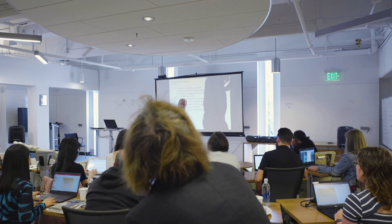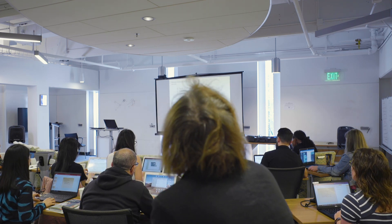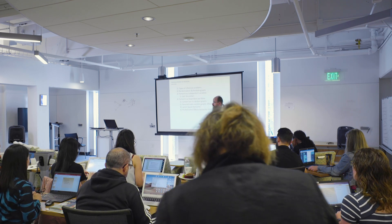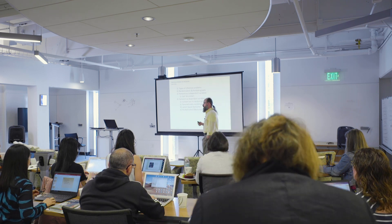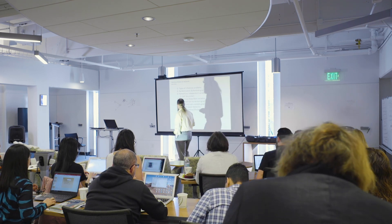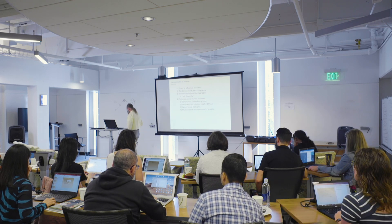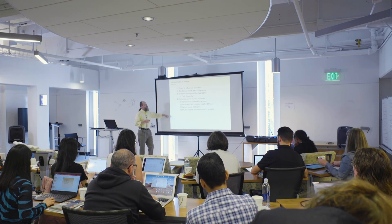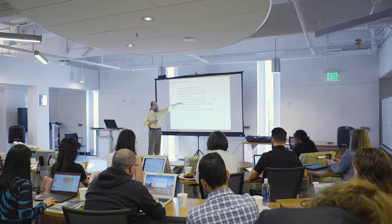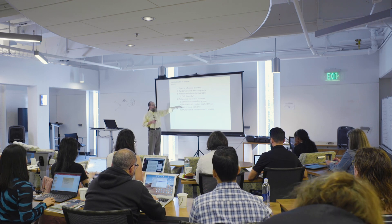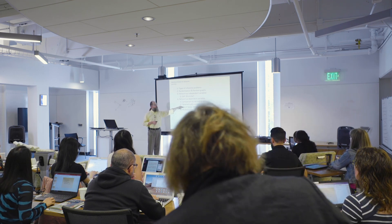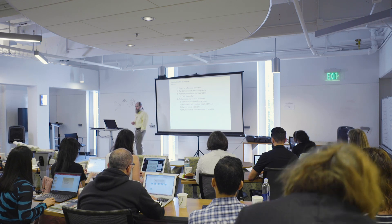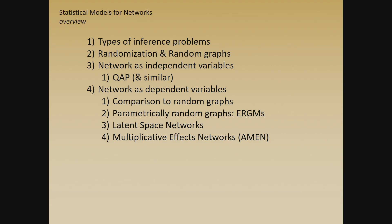We're also going to talk about networks as dependent variables — if I want to figure out why two people are tied, say as a function of their health status. We'll start with the simplest ideas, build through a comparison to random graphs among parametric models, and end with some cutting-edge stuff occurring now.